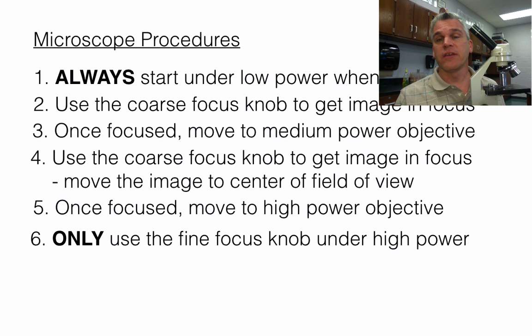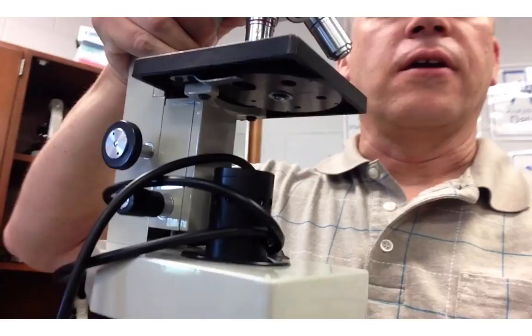So to recap: use two hands when you get your microscope out, put the microscope on the center of your desk, and when it's time to put it away, walk over to the microscope cabinet. Make sure your microscope is on the low power objective — not medium or high. The cord is just loosely wrapped around the base. Put it away right in its spot. It's that easy.